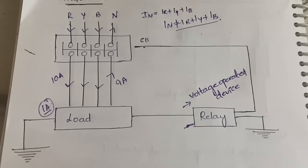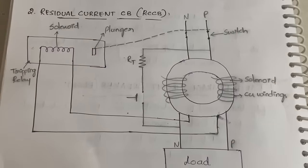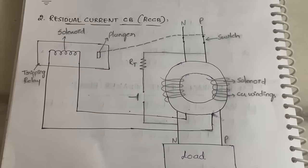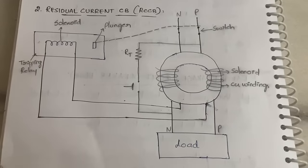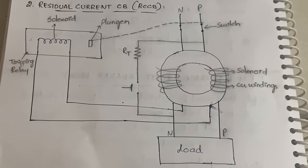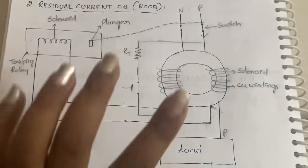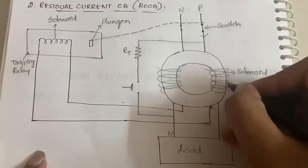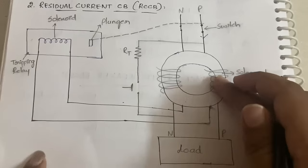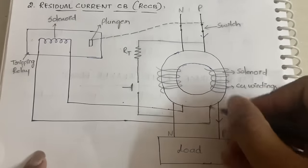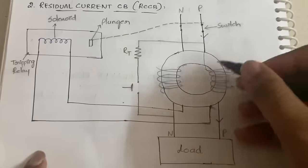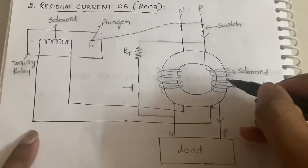Now let us see about the current operated ELCB, which is RCCB. In normal condition, current comes in through the phase to the right side windings, then back to the phase wire and through the load. The same phase wire is connected to the right side windings, and those right side windings are again connected to the phase wire going to the load.